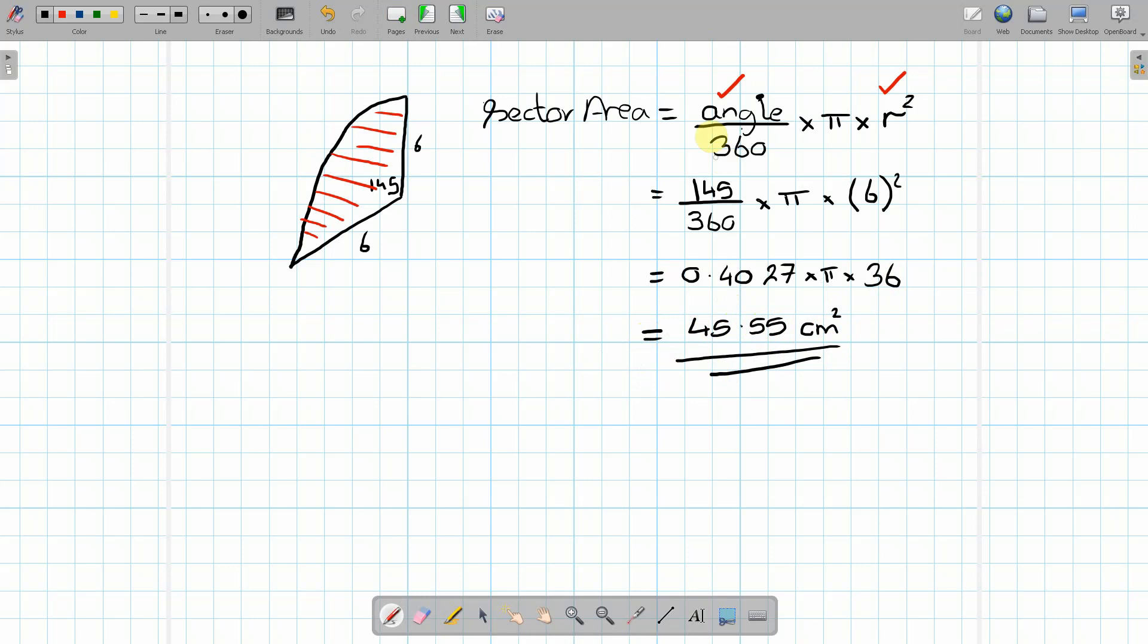So again, the formula is very similar to the arc length. However, instead of diameter, we have r squared. And that's how we achieve the area units of centimeters squared rather than just centimeters.